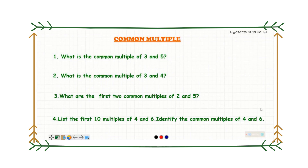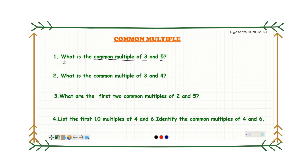Hi everyone! Last time we discussed multiples. This time we will be discussing common multiples. Since we know how to find multiples of a number, let us now find the common multiple of two or more numbers. In this example, what is the common multiple of five and three? To get the common multiple, we need to write the multiples of each number. Let's use listing, since that's the easiest way.